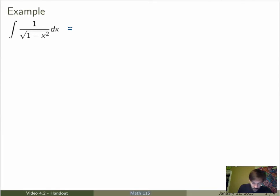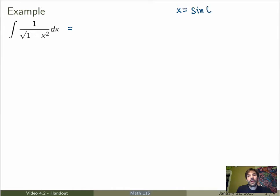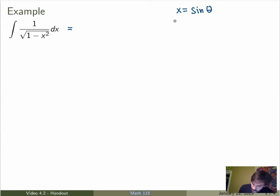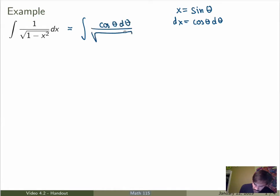The idea is to replace x by a trig function so that we can take advantage of Pythagorean identities to simplify the integral. If we substitute x equals sine of a new variable theta, then plugging in gives 1 minus sine squared, which is just cosine squared. So the integral simplifies. With dx equal to cosθ dθ, we get cosθ dθ over the square root of 1 minus sine squared theta, which is just the integral of cosθ dθ.